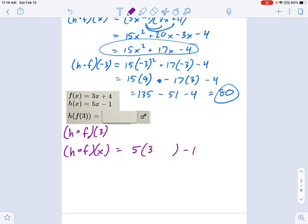That's 3x plus 4. So this becomes 15x plus 20 minus 1, so that's going to be plus 19. That's h of f of x.